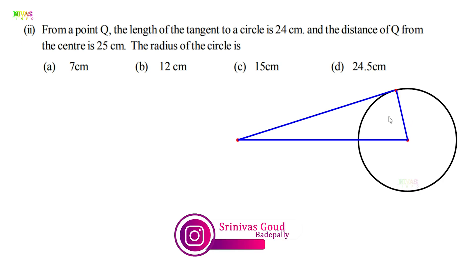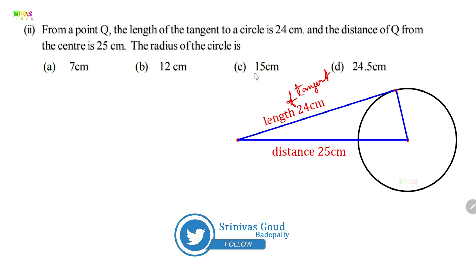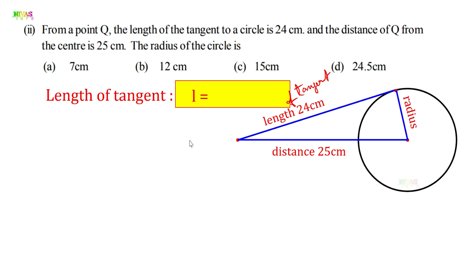We need to find the radius. We are given the length of the tangent and the distance. Since we have a right triangle with one side missing, we can apply the Pythagorean theorem. There is a formula: Length of tangent L = √(d² − r²), where d is the distance and r is the radius. We can modify this to find r.